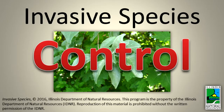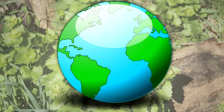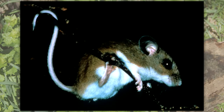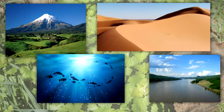Invasive Species Control. Organisms tend to live in one general area on Earth. They may find it hard to spread to new places because of their size, or because of barriers like mountains, oceans, deserts, and rivers.